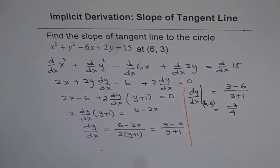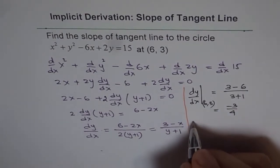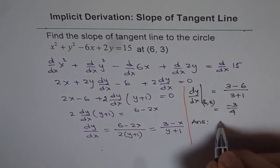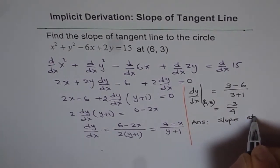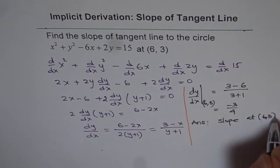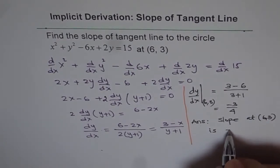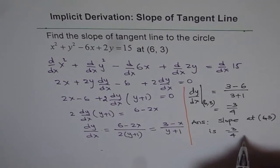That is the slope at the given point, and we can write down our answer: slope at (6, 3) is minus 3 over 4.